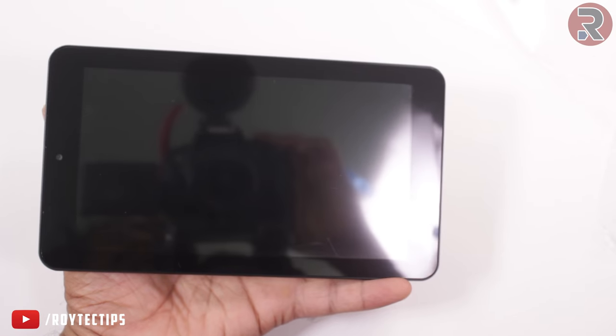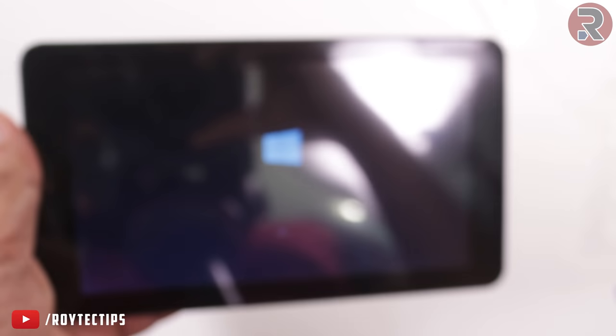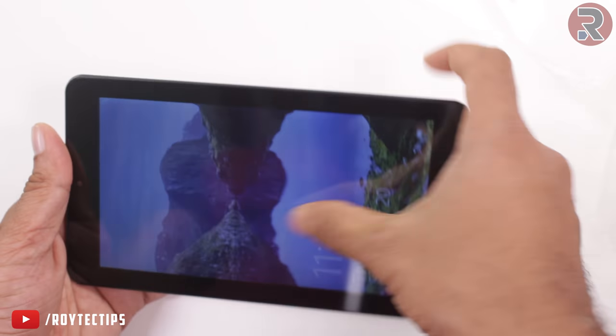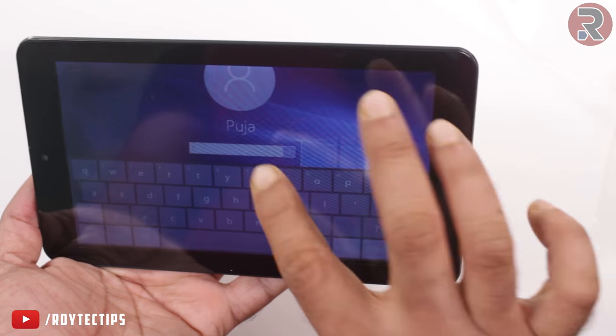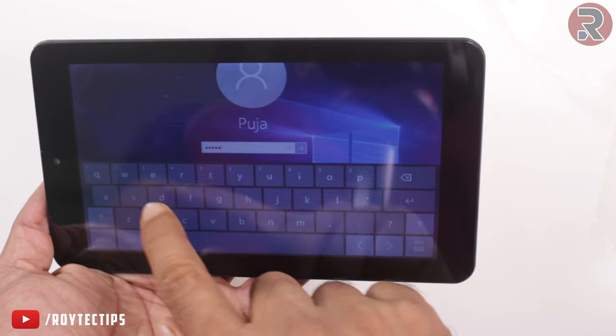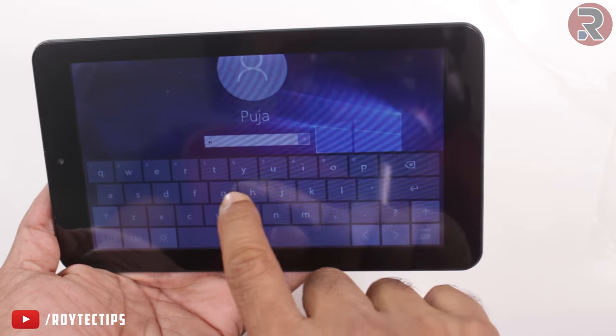Now let's power on the tablet and check if the touch screen is working. As you see, now the touch screen is working, so we successfully repaired the touch screen.